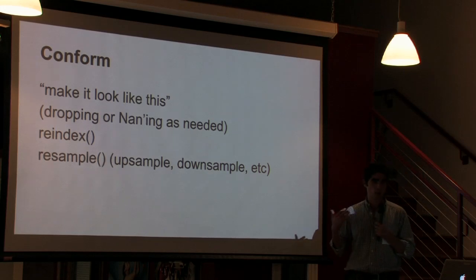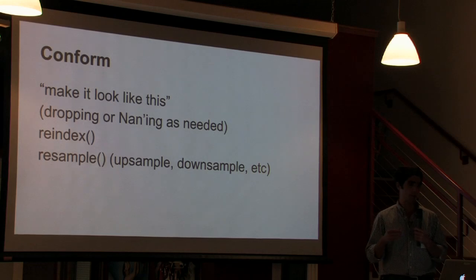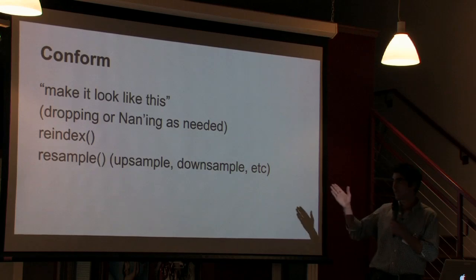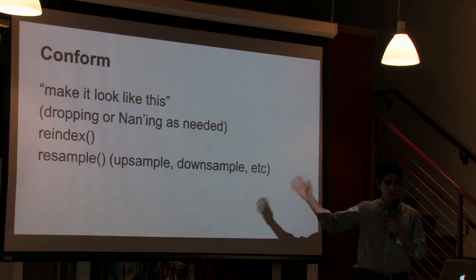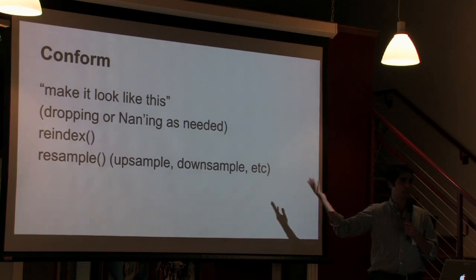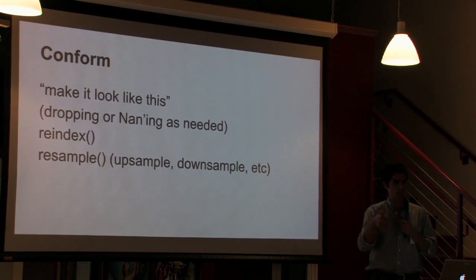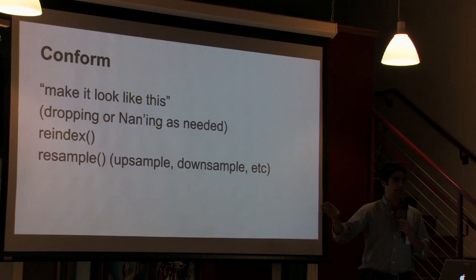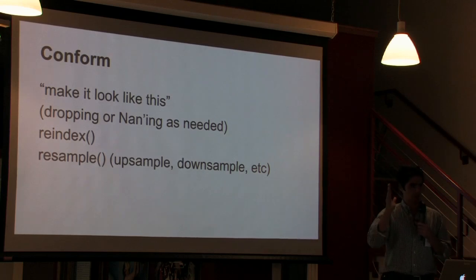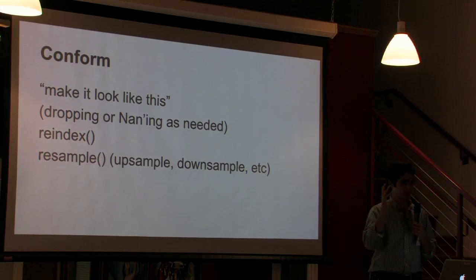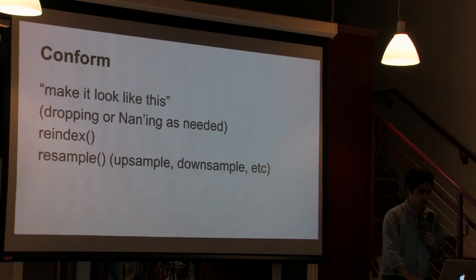Conform: you'll hear the term reindex brought up a lot. Reindex is sort of the master operation — it's terribly named, it should have been called conform. There are other things like resampling, various types of upsampling, and they're all just different ways of saying: I'm going to do an operation on the index of this data frame and make it look like this. Reindex is the most direct way of doing that: here is an index, make it look like this. If there are missing entries, just pop NaNs in there; if something doesn't show up, drop it.